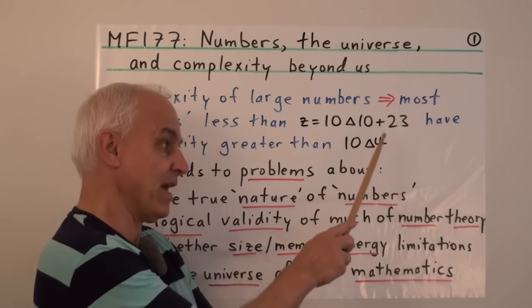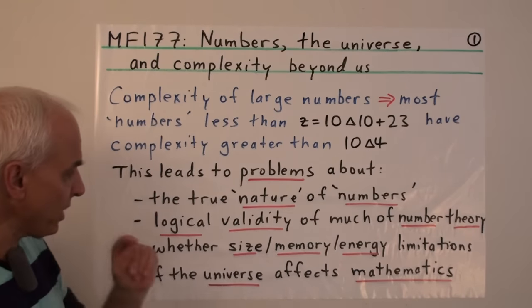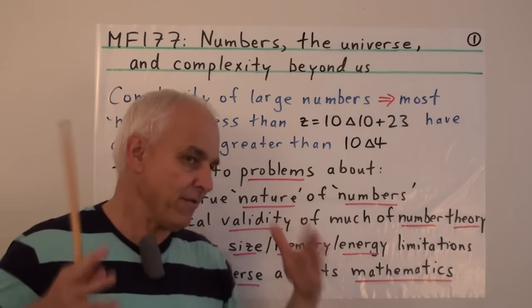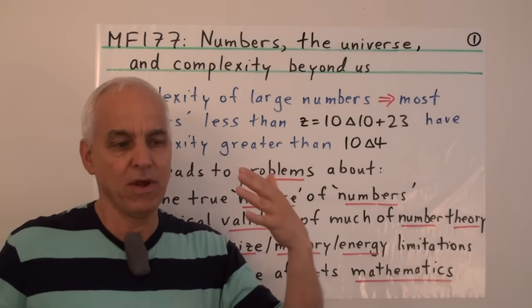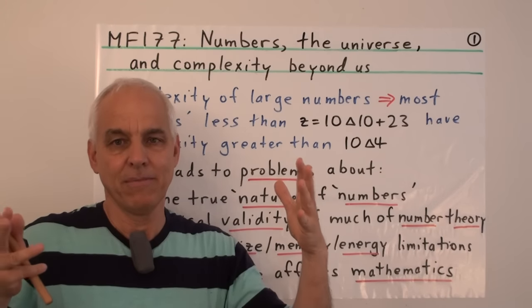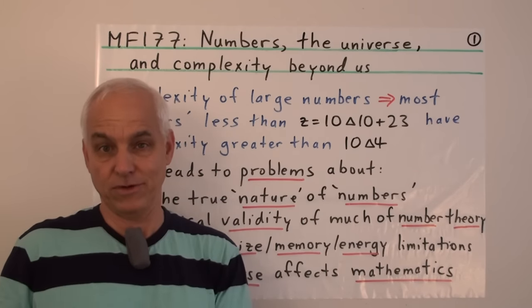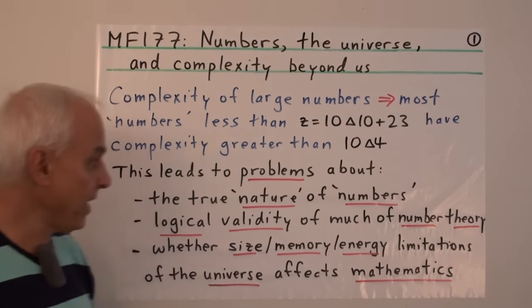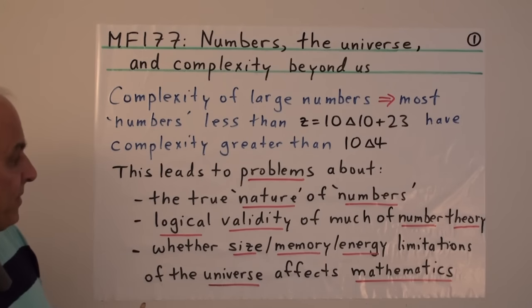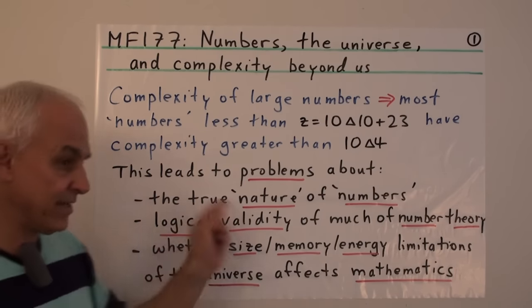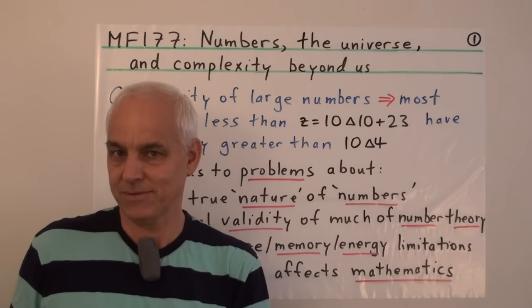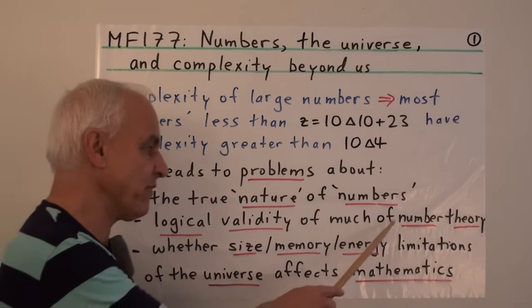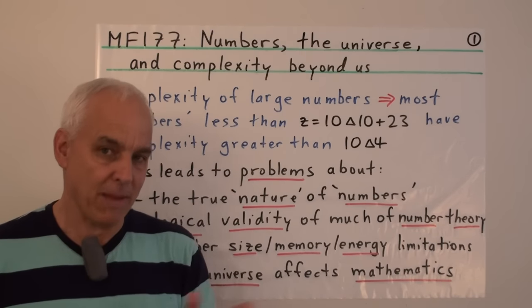10▲4 is 10 to the 10 to the 10 to the 10. We're going to see that this has ramifications for us because this number is very roughly commensurable with the potential possibilities for writing expressions down in our universe, according to our modern view of how big the universe is. This leads us to very interesting problems and suggests we may have to reconsider the nature of numbers, and the logical validity of much of number theory is perhaps thrown into question.